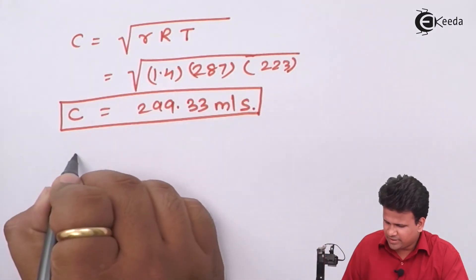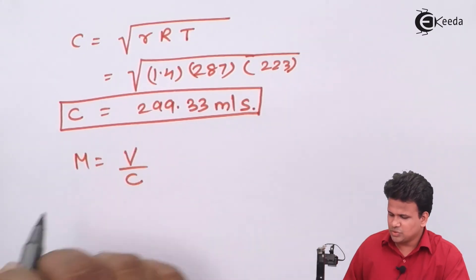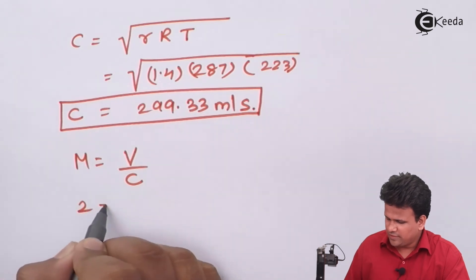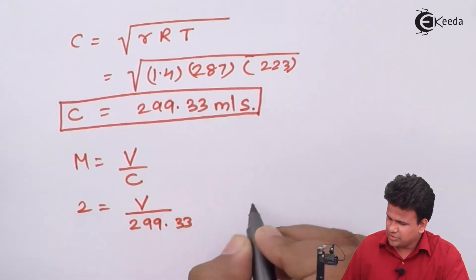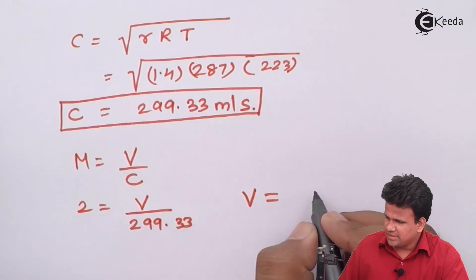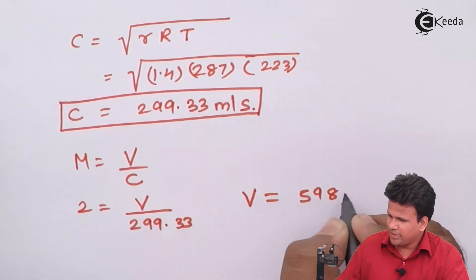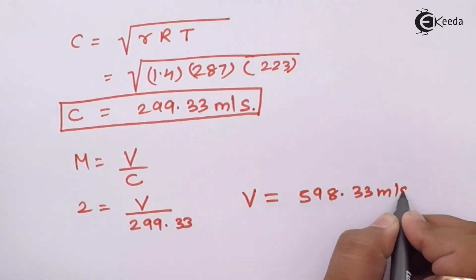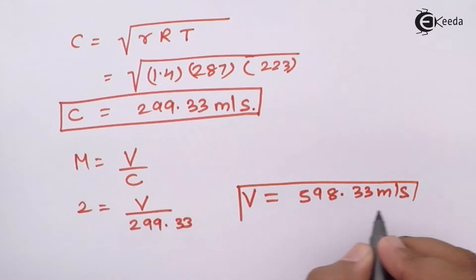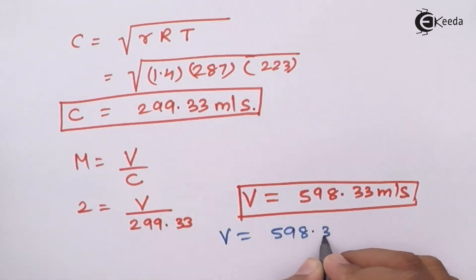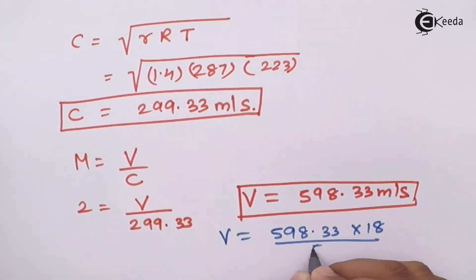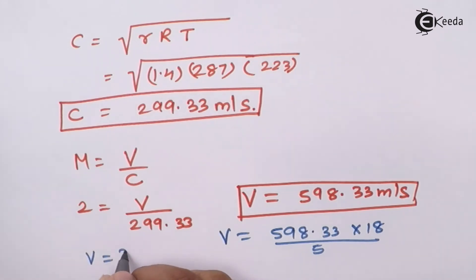The Mach number M equals V divided by C, and M equals 2. So the velocity of the fluid V equals 2 multiplied by 299.33, which gives us 598.33 meters per second. Converting to kilometers per hour: 598.33 multiplied by 18 divided by 5 gives us 2155.77 kilometers per hour.